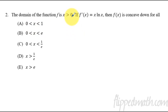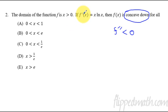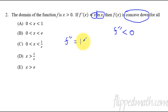Number two: we only care about x values greater than zero and we're given the first derivative. What they're really asking for is concave down. A function is concave down when the second derivative is less than zero — that's what I'm looking for. Now that I know what I'm looking for, I need to find the second derivative. I'll have to use the product rule because I have x times the natural log of x.